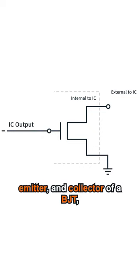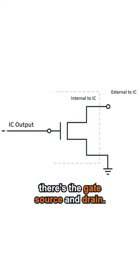Much like there's a base, emitter, and collector of a BJT, in a MOSFET there's the gate, source, and drain.